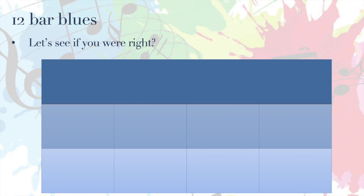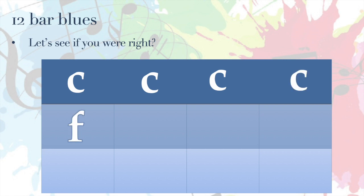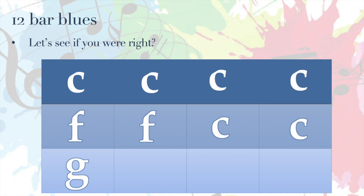Okay, let's see if you were right. On our top line we've got C, C, C and C. On our next line: F, F, C and C. And can you remember what was in the bottom line? That was G, F, C and C. And that is the fundamentals of the 12-bar blues. Easy.